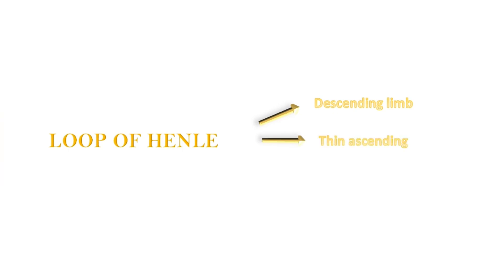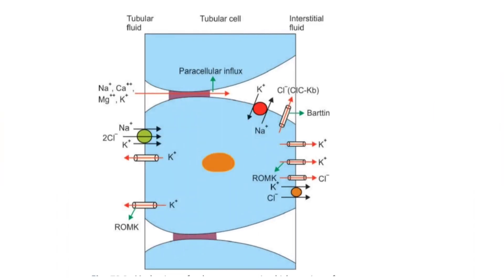Reabsorption of sodium occurs in the thick ascending limb of the loop of Henle. The descending limb and thin ascending limb are impermeable to solutes. In the thick ascending limb, sodium reabsorption occurs via the sodium-potassium-2Cl⁻ co-transporter, which transports one sodium, one potassium, and two chloride ions from tubular fluid into tubular cells. The basolateral sodium-potassium pump then pumps sodium into the lateral intercellular spaces.